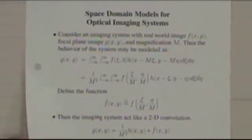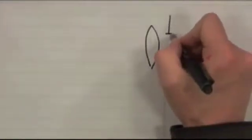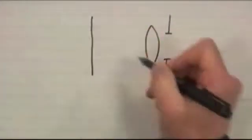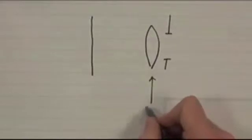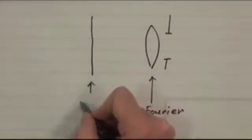As I described, when you had the lens, and then there's an aperture here, and there's a focal plane, this is the Fourier domain, and this is the image domain.